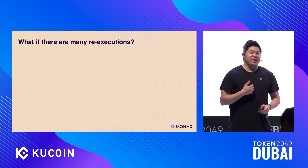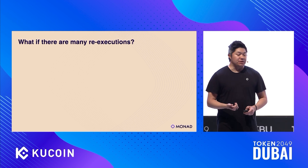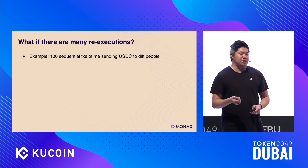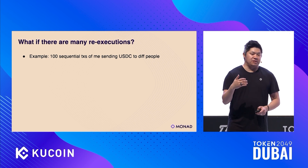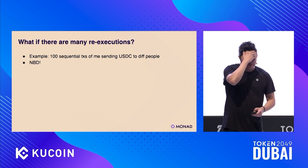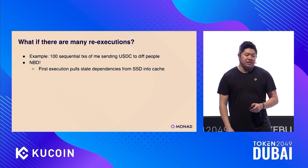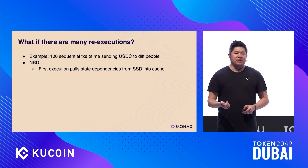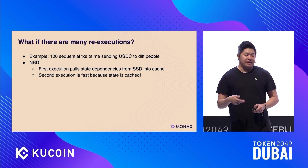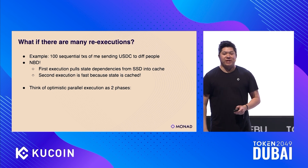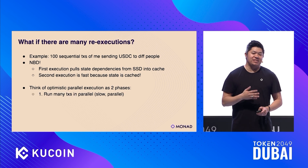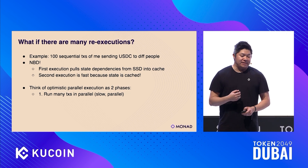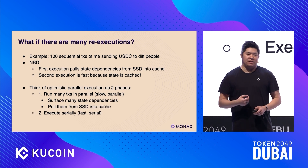The most common question is: what happens if there's a bunch of transactions with serially dependent state? For example, if I send 100 transactions of me sending USDC to different people, these are all going to be serially dependent and we'll have to re-execute transactions two through 100. This is actually not a big deal, because the first execution is pulling those state dependencies from SSD into cache. Then all the other executions are quite cheap because the state is cached. You can think of optimistic parallel execution as two phases: first running many transactions in parallel — slow but pulling many transactions' worth of state in — and second a fast phase because all dependencies are already in cache.